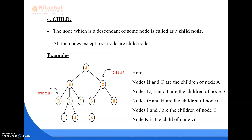Next comes the child node. The descendants of a node — the nodes that are under the parent node — are known as child nodes. All nodes except the root node are child nodes. Here, B and C are children of A; D, E, and F are children of B; G and H are children of C; I and J are children of E; and K is the child of G.